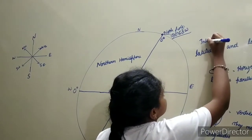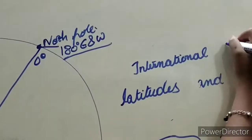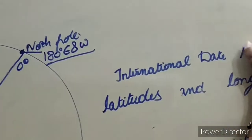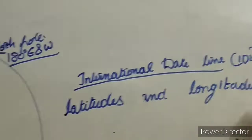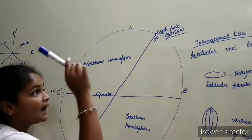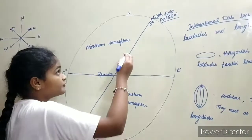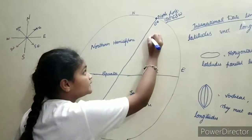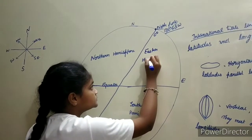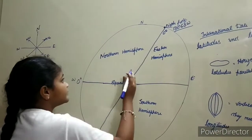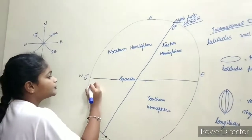The 180 degrees east and west longitude is known as the International Date Line. These zero degrees longitude and the International Date Line together divide the Earth into two hemispheres. From zero degrees to 180 degrees right is the Eastern Hemisphere. From zero degrees left to 180 degrees is the Western Hemisphere.